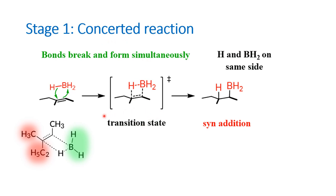In the concerted mechanism, electrons move from the double bond to boron (since borane is a Lewis acid), and simultaneously the B–H bond breaks and hydrogen attaches to the carbon on the other side. This is a transition state, unlike in acid-catalyzed reactions. The result is hydrogen attaching to the less substituted carbon.